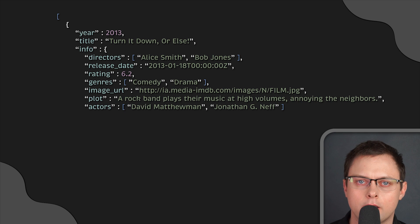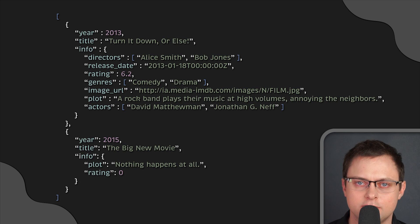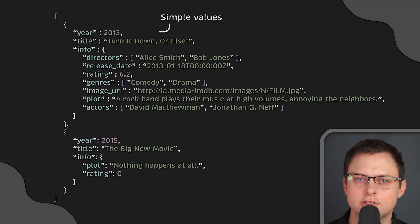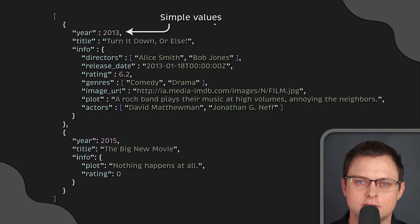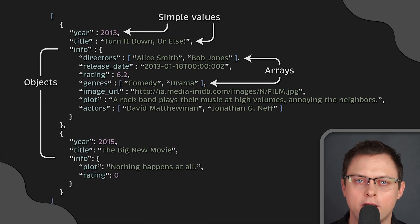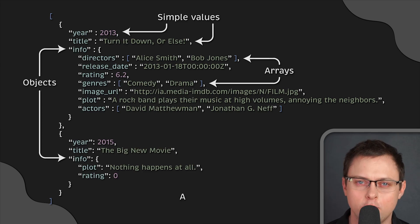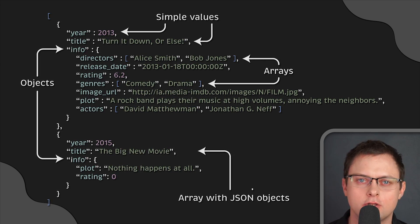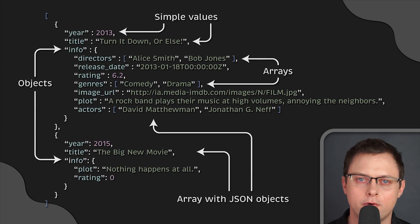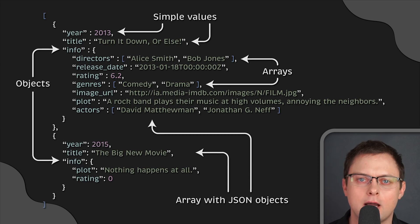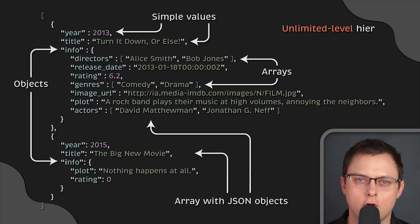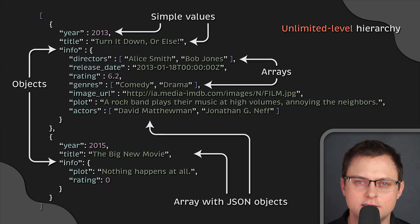Here's an example of a JSON-like document that describes a film dataset. You can see that the JSON document holds simple values, arrays, and objects quite flexibly. You can even have an array with JSON objects within it. Document-oriented databases allow you to create unlimited levels of hierarchy of embedded JSON objects, and it's entirely up to you what schema you want to give to your document store.